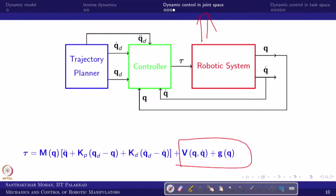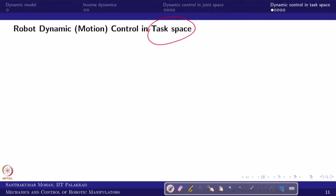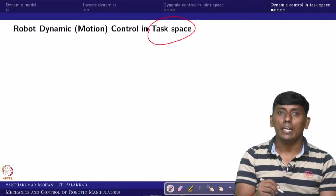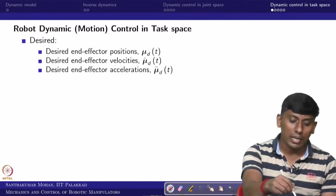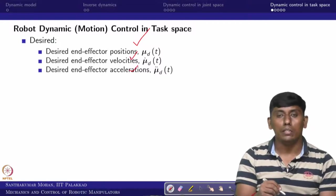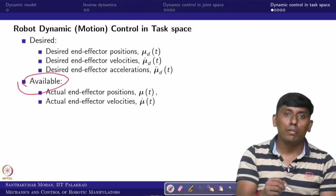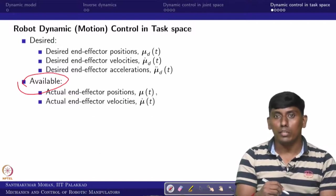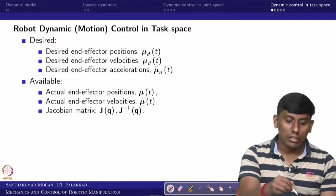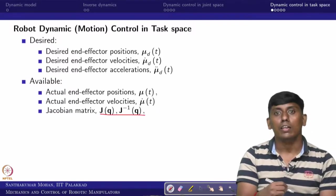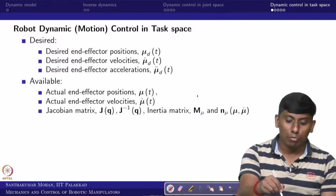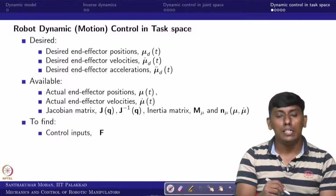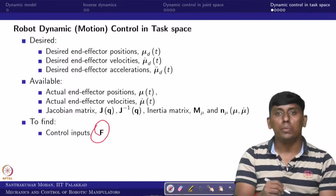We will see motion control in task space. What is expected as given: the desired end-effector position, velocity, and acceleration are all available. From the system side, actual end-effector position, actual joint position, actual end-effector velocity, and actual joint velocities would be known. Further, the Jacobian matrix, inertia matrix, and other effect terms are all available. Then our target is to find what would be the end-effector forces and moments to control the system in task space.